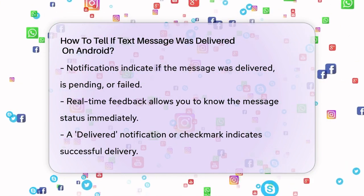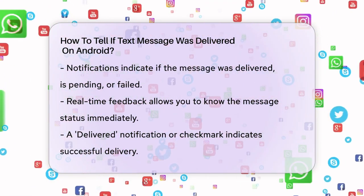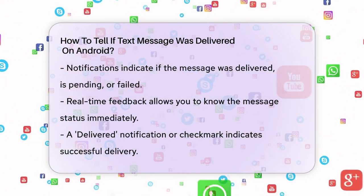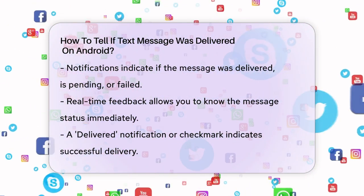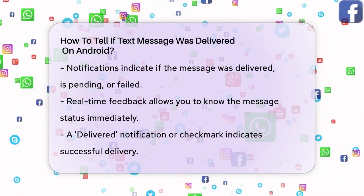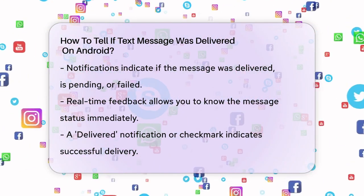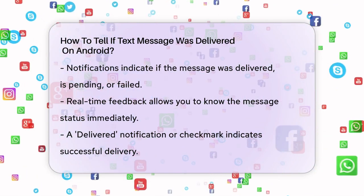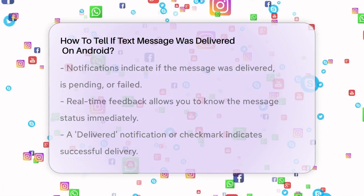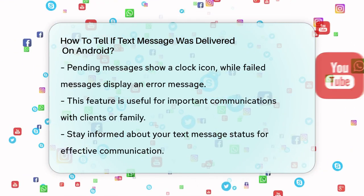For example, if the message was delivered, you might see a notification saying 'delivered' or a check mark next to the message in your messaging app. If the message is pending or failed, you'll see a different indicator, such as a clock icon for pending messages or an error message for failed ones.